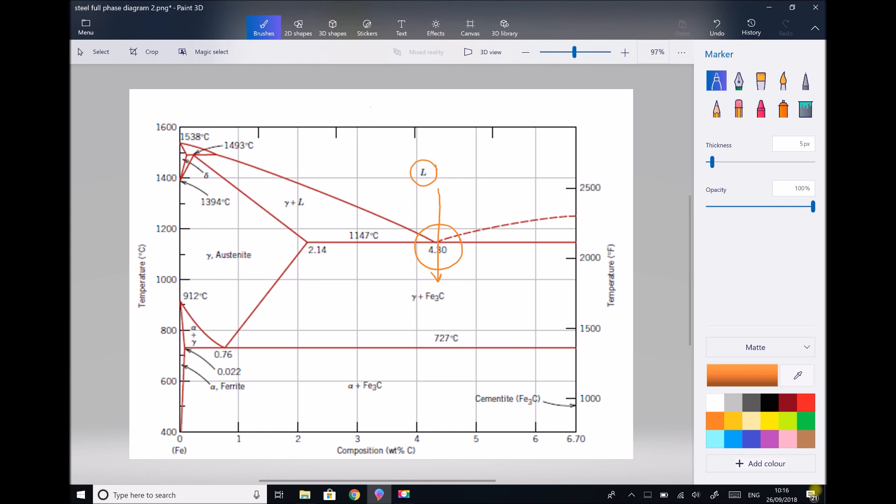On the far left hand side we see a region marked gamma austenite. Gamma austenite is our FCC structure of steel. In addition, we have Fe3C which is iron carbide, but iron carbide is also referred to as cementite. This point here where we go directly from liquid to a layered solid is called our eutectic composition. Here we have our eutectic composition.